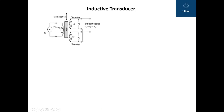Here you can see the circuit diagram of LVDT — one primary winding excited with an AC source and two secondary windings S1 and S2 on either side of the core, connected in series opposition. The output is taken between these two points, giving a differential output voltage equal to the difference of V1 and V2. When the core is exactly at the center of the primary and secondaries, this is called the null position.